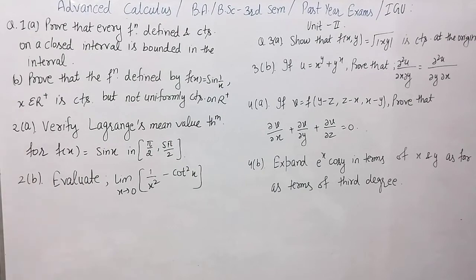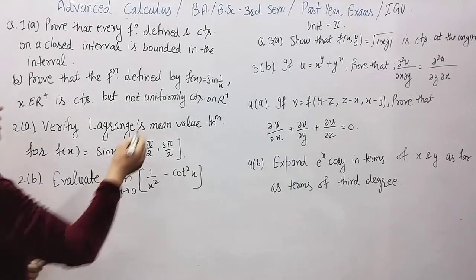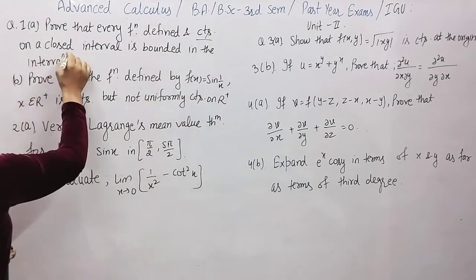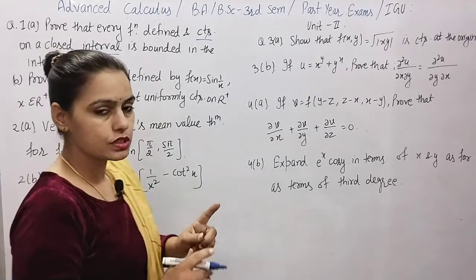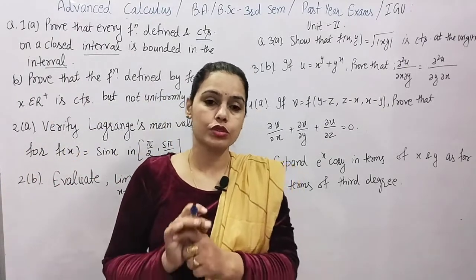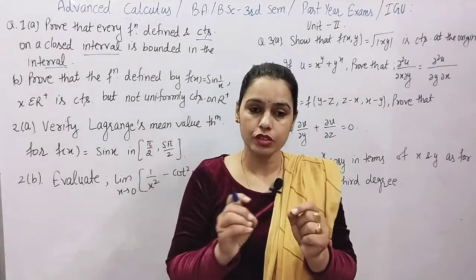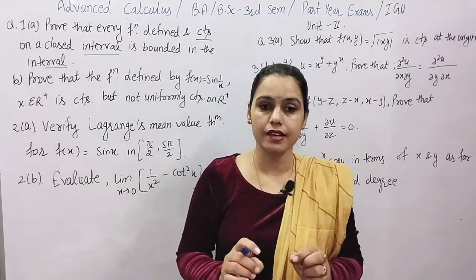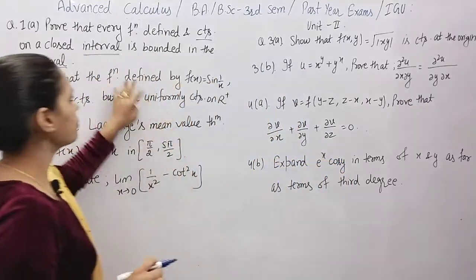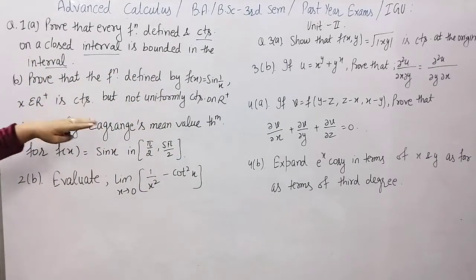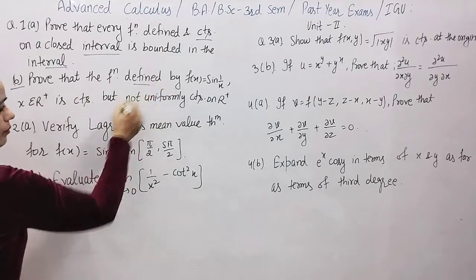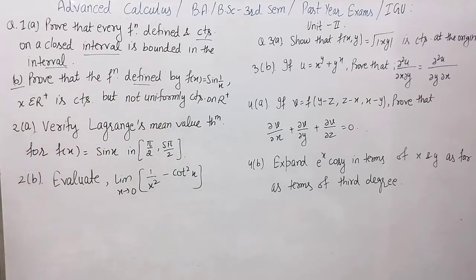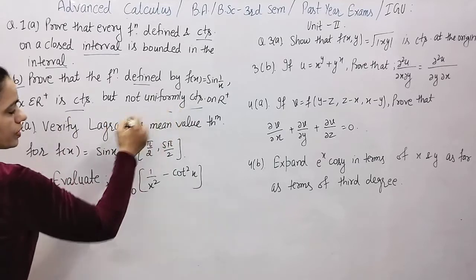The first question is: Prove that every function defined and continuous on a closed interval is bounded in the interval. The theoretical portion — I told you earlier that when we talk about advanced calculus in the first chapter, the theoretical portion is very important. No theorem should you skip. The second part is: Prove that the function defined by f(x) = sin(1/x) is continuous but not uniformly continuous.